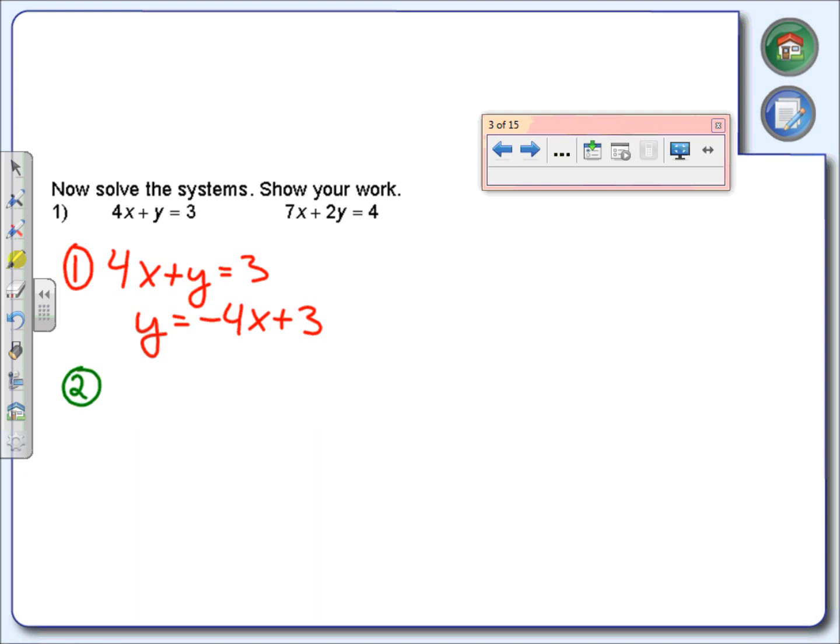Step two: use the other equation, which in our case is 7x plus 2y equals 4. Use the other equation but replace the variable with its equivalent expression. So we're going to replace y with negative 4x plus 3. Everything else remains the same. From here we're going to solve for the x. 2 times negative 4x is negative 8x, 2 times 3 is 6.